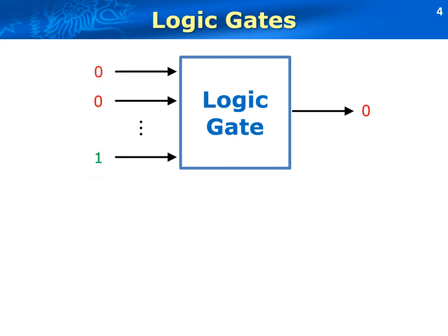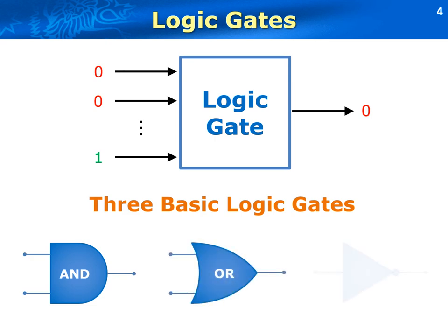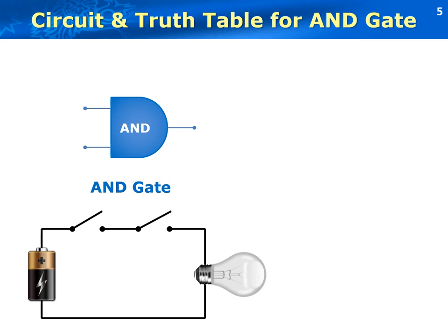There are a variety of logic gates. The most fundamental ones are AND, OR, and NOT. The symbols for these logic gates are as follows. The intuitions behind the AND and OR gates come from logic circuits. For example, the AND gate represents a series circuit. The expression x1 AND x2 equals y has the following meaning: the two inputs x1 and x2 correspond to the states of two switches in the circuit — 1 for switch on and 0 for switch off. If x1 is 1 and x2 is 1, it means both switches are pressed.